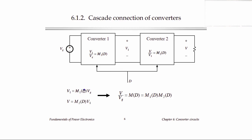A second thing we can do is connect converters in cascade. Take any converter as converter one with conversion ratio M1(D), so its output voltage V1 equals M1(D) times the input VG. We take that voltage V1 and use it as the input to a second converter with conversion ratio M2. Its output voltage, applied to the load, is M2 times V1. The overall conversion ratio of this cascade connection is V equals M1 times M2 times VG — giving an overall conversion ratio of M1 times M2.